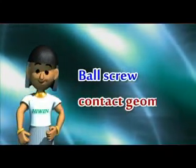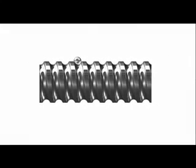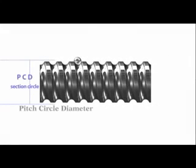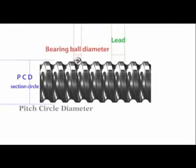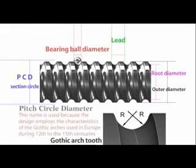Now we will introduce the contact geometry of ball screws. Pitch circle diameter is the diameter of the circle formed by the central diameter of ball screws' upper and lower ball bearings. The lead is the distance traveled by the nut when the screw turns one rotation. The bearing ball diameter. The root diameter is the smallest diameter of the threads. The outer diameter, also known as the nominal outer diameter, is the largest diameter of the threads. A gothic arched tooth design has two identical radii and an offset center.